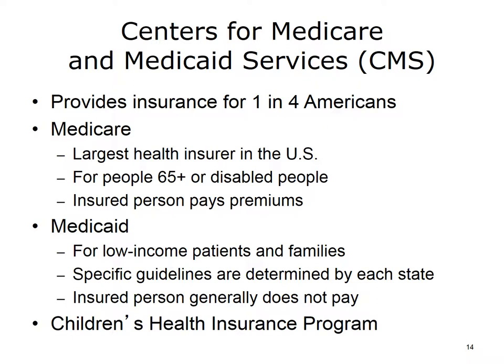Medicaid is a health insurance program targeted at low-income individuals and families who meet specific requirements. The eligibility rules and services provided vary by state. Medicaid reimburses the medical provider directly, although some states require the patient to contribute a small copayment. Another division of CMS is the Children's Health Insurance Program, or CHIP. It serves uninsured children and pregnant women who do not qualify for Medicaid but cannot afford private health care insurance.